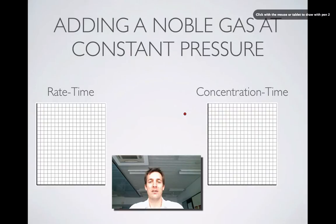We're now adding our noble gas at constant pressure. We are still dealing with this system A turning into 2B. Adding the noble gas at constant pressure means the pressure of the system hasn't changed in spite of the fact that we've pumped some more gas in. So the box must have got smaller.